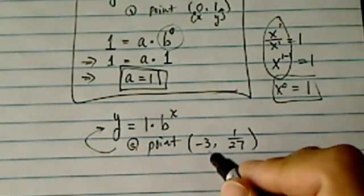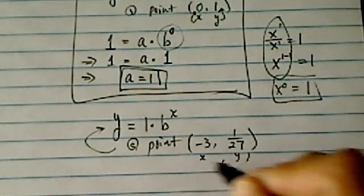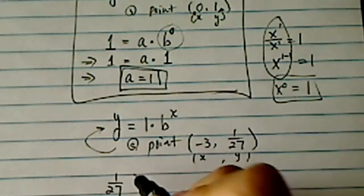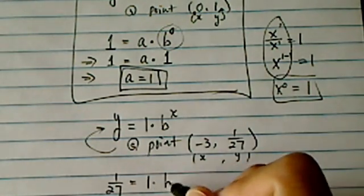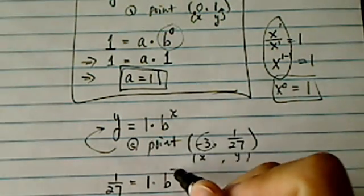This is X, and this is Y. So Y is one over twenty-seven, one times B, X is equal to minus three.